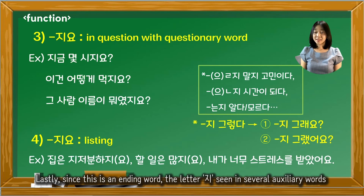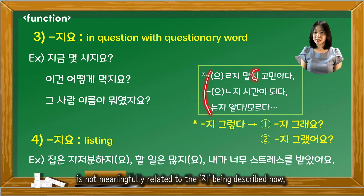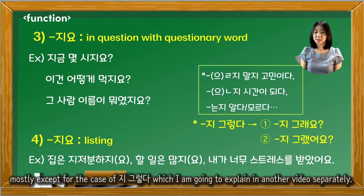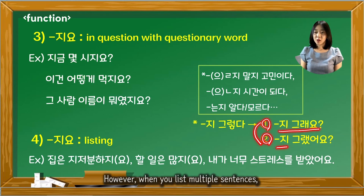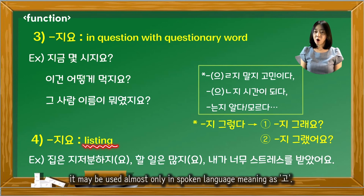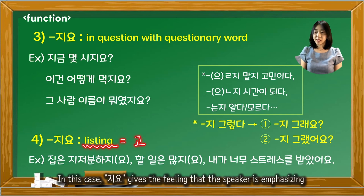Lastly, since this is an ending word, the letter 지 seen in several auxiliary words is not meaningfully related to the 지 being described now — mostly except for the case of 지 그렇다, which will be explained in another video separately. It can be used in two forms and functions. However, when you list multiple sentences, it may be used almost only in spoken language, meaning 'and' like 고.